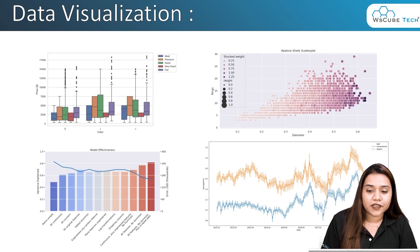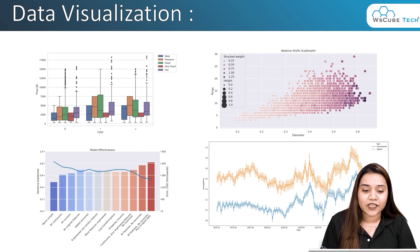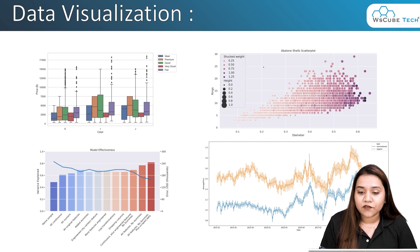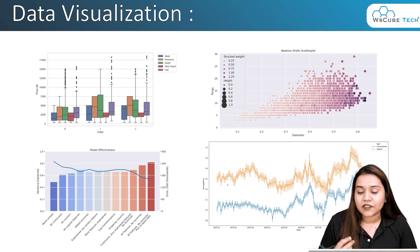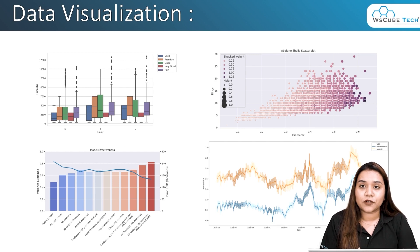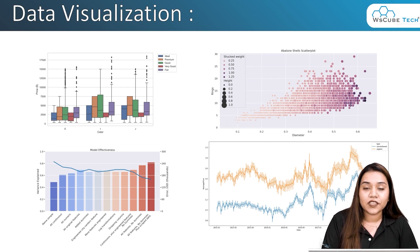Now let's understand what kind of charts can be created using visualization. These are just some examples: we have a box plot, which you might have seen in matplotlib, then a scatter plot, a bar chart, and also a line plot. These are some types of plots that can be created in Seaborn.